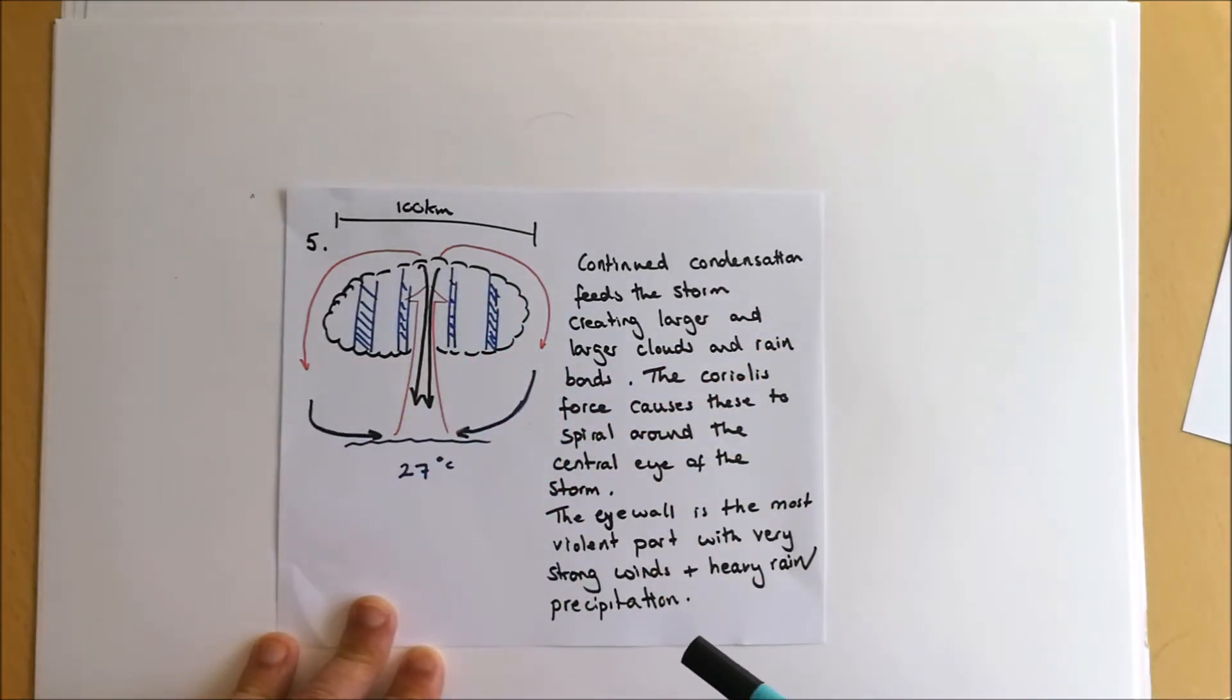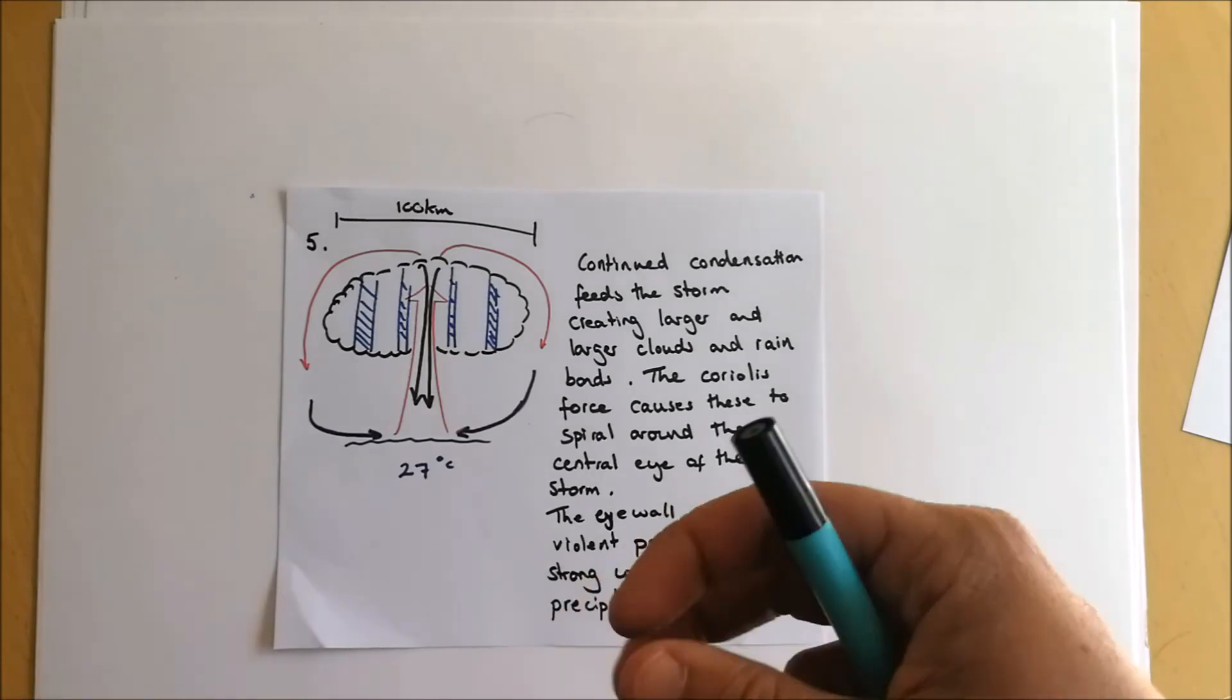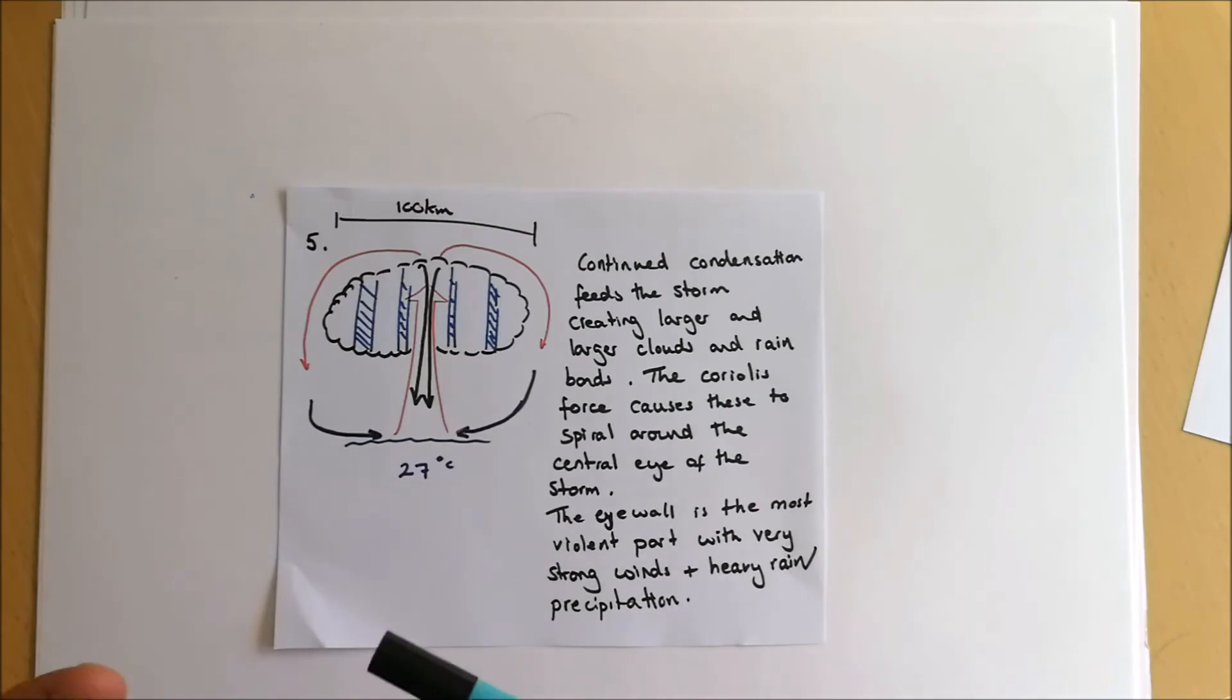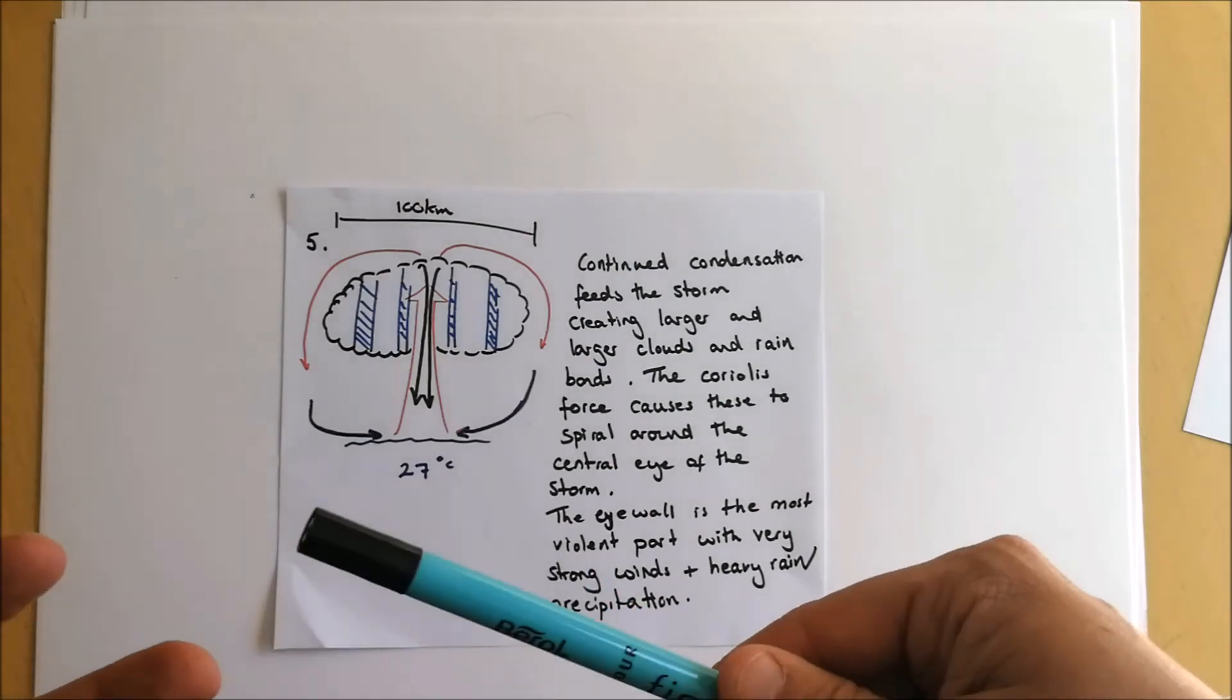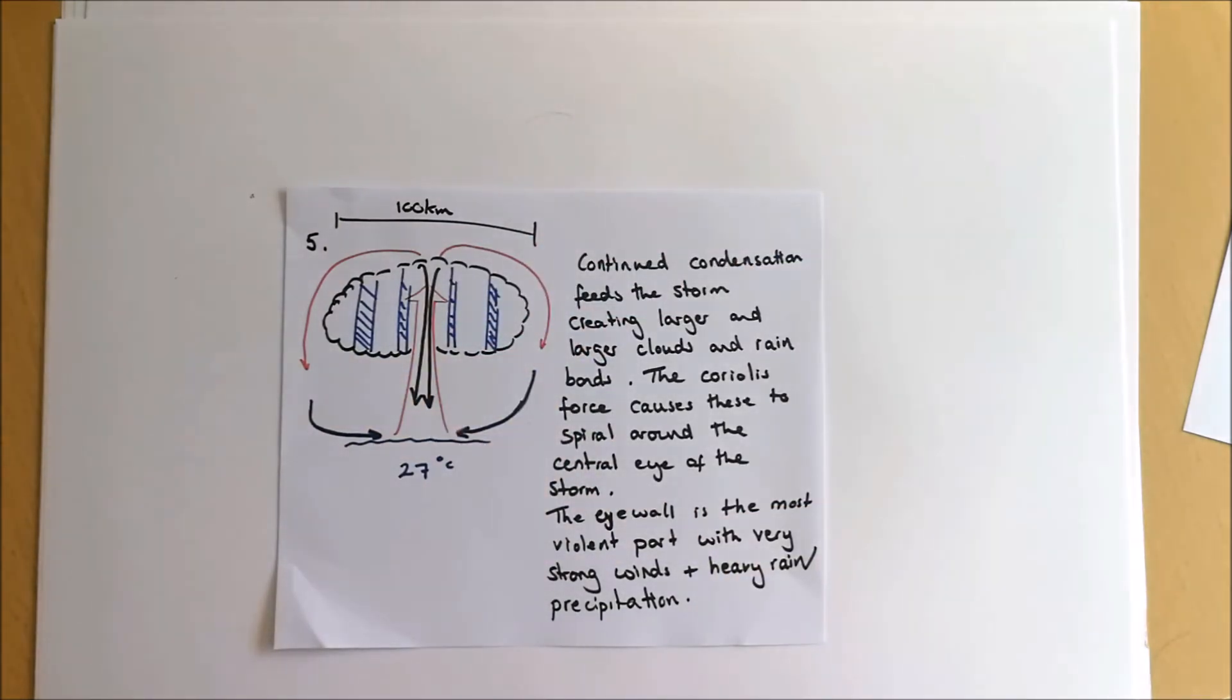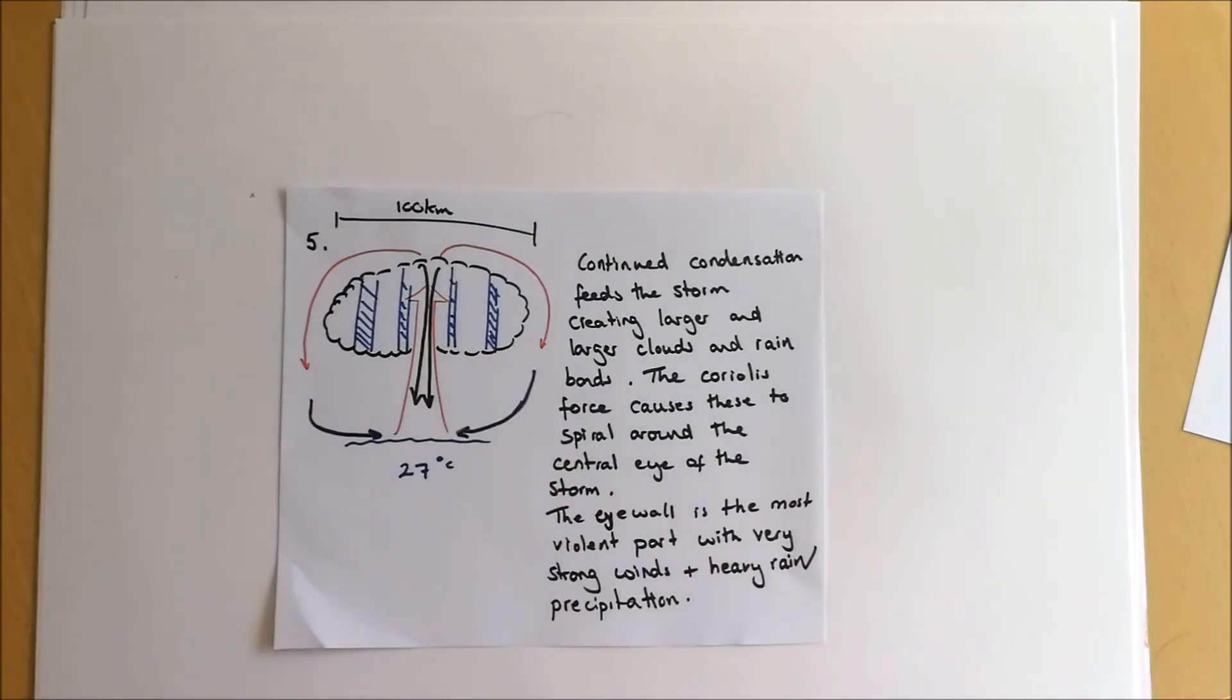However, not all of the air can come out the top and around the side. Some of it's actually forced back down the center of the storm. That sinking air actually creates quite a calm stable area of weather called the hurricane eye. You'll see that in satellite images of hurricanes spiraling around that central area. In the eye, conditions are very calm, there's very little cloud formation due to the fact that the air is sinking rather than rising. Conditions are quite light; you may be able to see the sun during the day or stars at night because there's very little cloud formation.